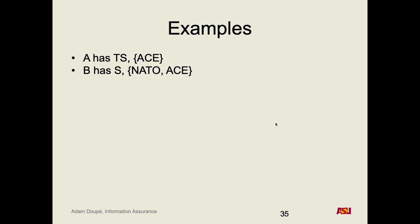Now we can run through some examples. A has top secret level and categories {ace}, and B has secret and categories {NATO, ace}. Can A read something that is top secret with the empty set of categories? Yes. First condition: top secret is less than or equal to top secret. Second: the empty set is a subset of {ace}. So yes, we can read that.